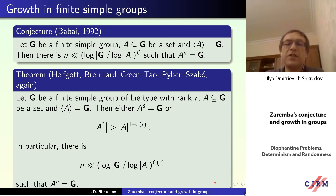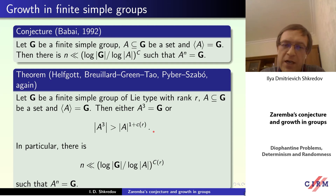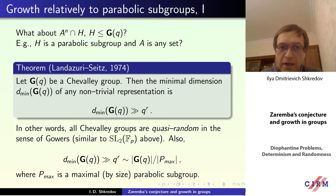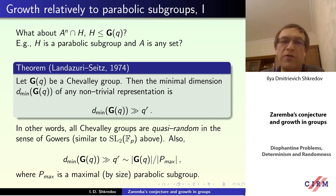Babai's conjecture is known to be true for groups of Lie type. This is a generalization of Helfgott's result. It is proved that exponential growth holds for any finite simple group of Lie type, and in particular this implies Babai's conjecture for such groups. However, this result works best for groups with small rank, since the constants depend on the rank. There is also a generalization of Frobenius's result about representations: a theorem of Larsen–Tiep which says that for any Chevalley group G(q) of rank r, the size of all minimal representations is greater than q to the r.